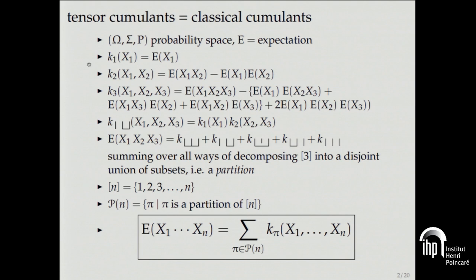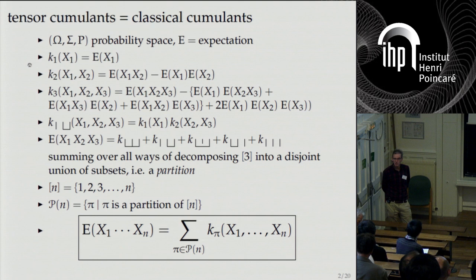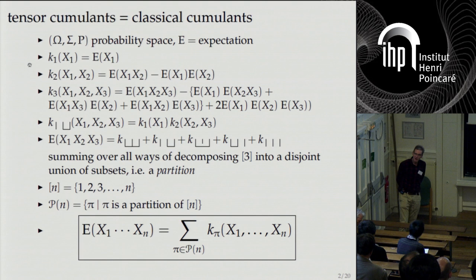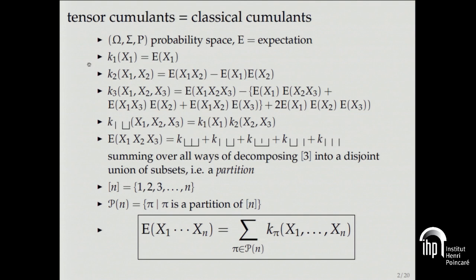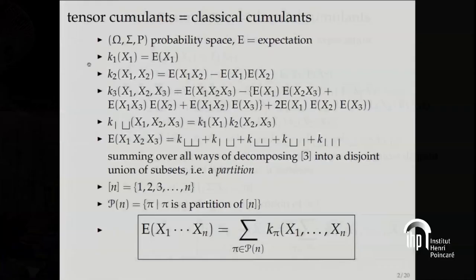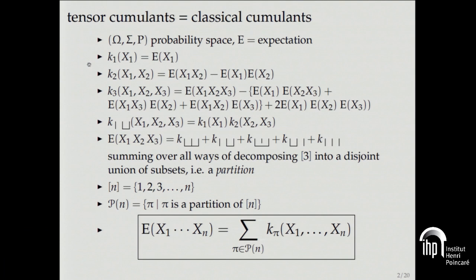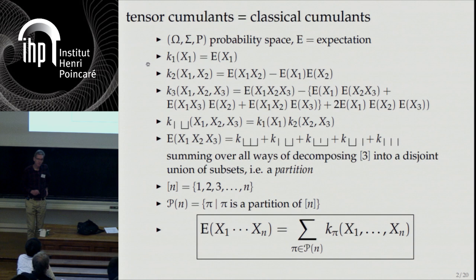I'm going to talk about what are called free cumulants. I don't think anyone has mentioned the word cumulant yet this week, so I thought I'd better say something about what a cumulant is because the whole talk is going to hinge on cumulants. Classical or tensor cumulants: you take a distribution on the real line, take its Fourier transform, take the logarithm, expand that as an exponential generating function, and the coefficients are the classical or tensor cumulants of the distribution. The crucial rule is that an expectation of any product of random variables can be expressed in terms of cumulants.